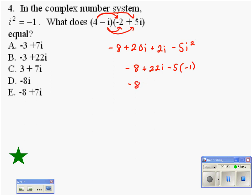We have negative 8 plus 22i. Negative 5 times negative 1 is positive 5. Let's combine like terms. Negative 8 plus 5 is negative 3.